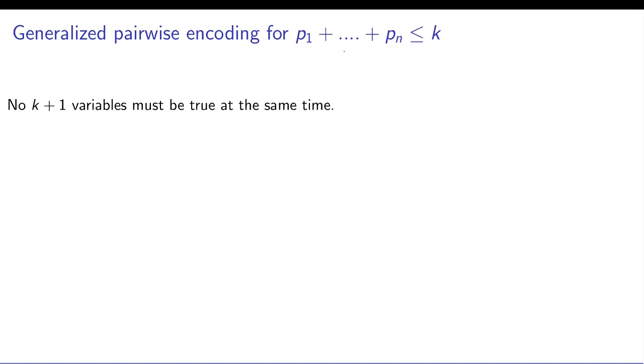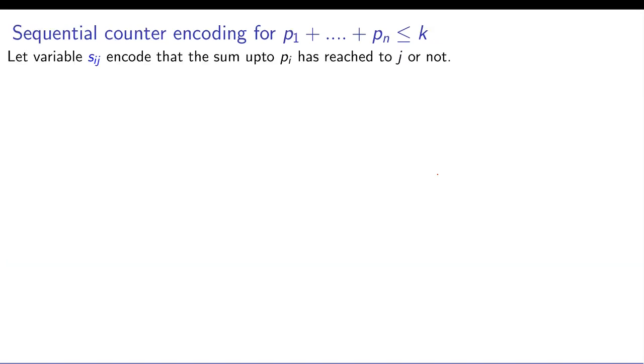If you want to encode that p1 to pn bits sum less than equal to k, then you have to essentially encode that k plus one variables must not be true at the same time. What you can do is choose k plus one variables from n variables and check that they're not true at same time, which can be encoded as a clause. So by choosing k plus one out of n variables you can basically encode all clauses. That's a very inefficient way of doing it.